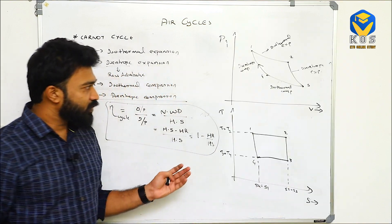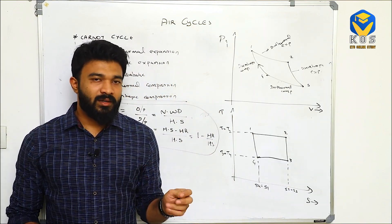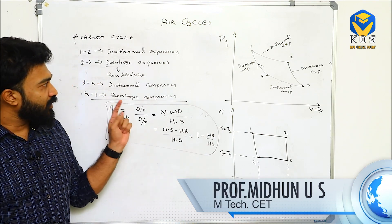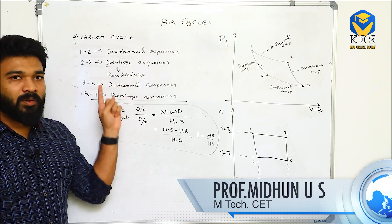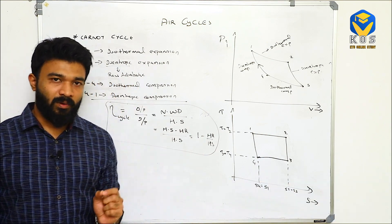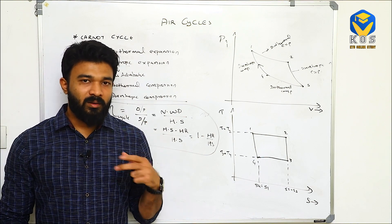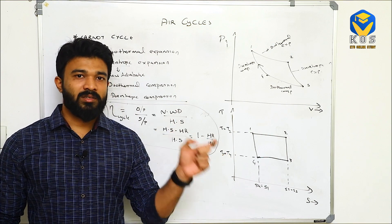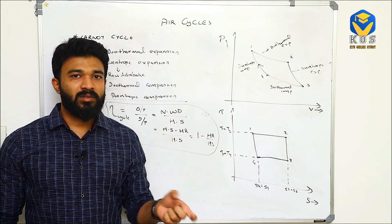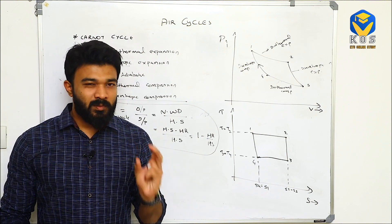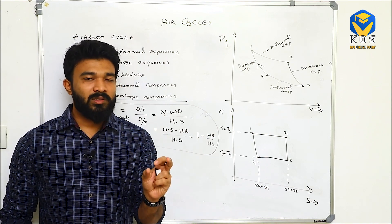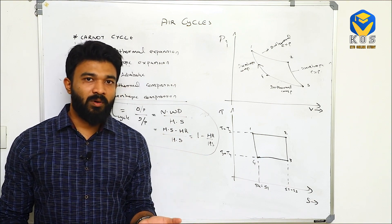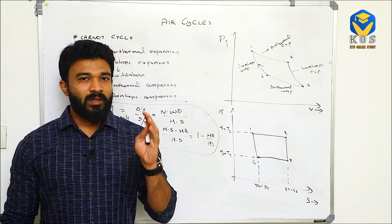Next, we need to find the heat rejection and heat supply processes. An important concept: isentropic process is otherwise called reversible adiabatic process. An adiabatic process means no external heat loss, that is Q equals zero. We must clarify the difference between adiabatic, reversible adiabatic, and isentropic processes.